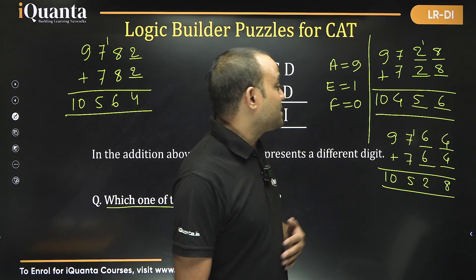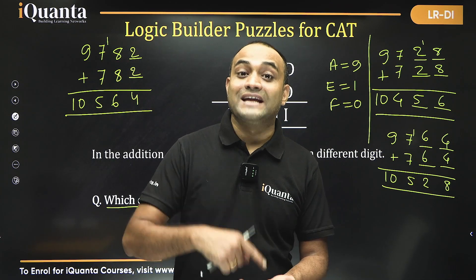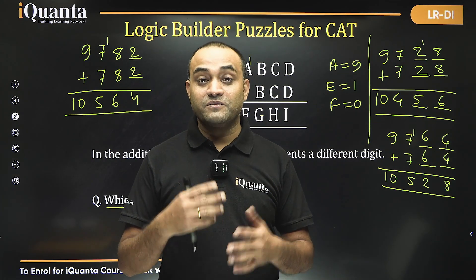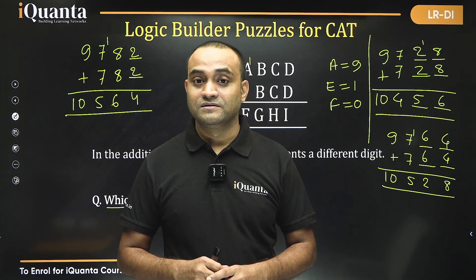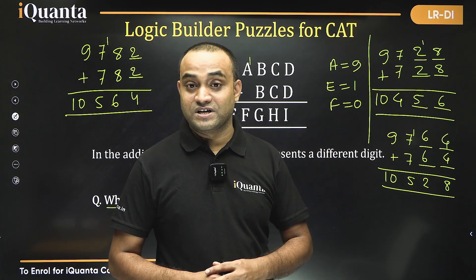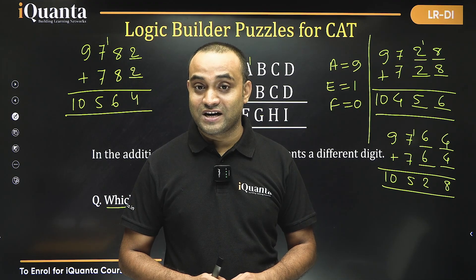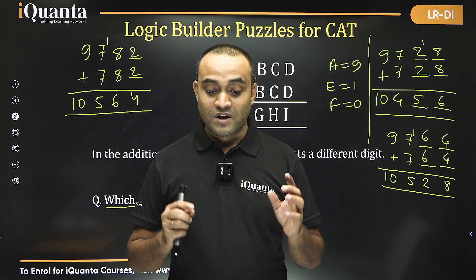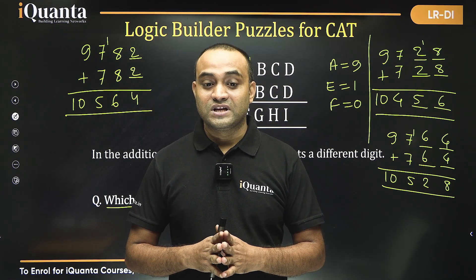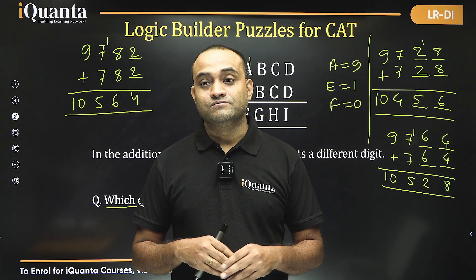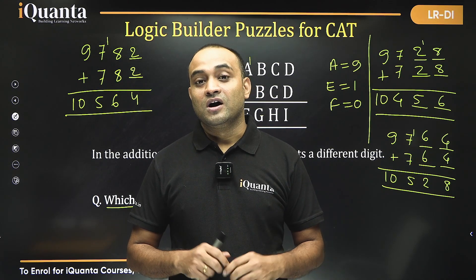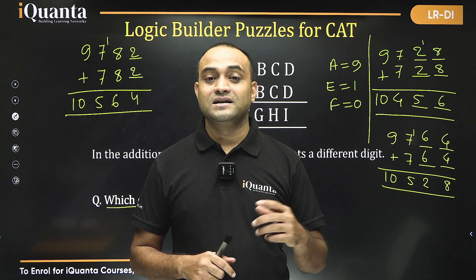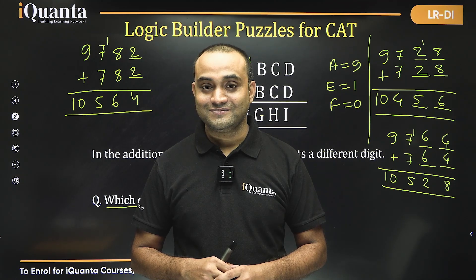Now this was not that easy a question. We had to consider all cases because it could have been possible that some other digit was also missing in some cases. Moreover, if the question had asked what different values B, C, or D can take, or what is the difference between the maximum and minimum value of D, you would have to solve all four cases — one case alone would not be sufficient. That is the key lesson here for LRDI sets where multiple cases are possible: you cannot just take one case and decide which answer is correct. Thank you.